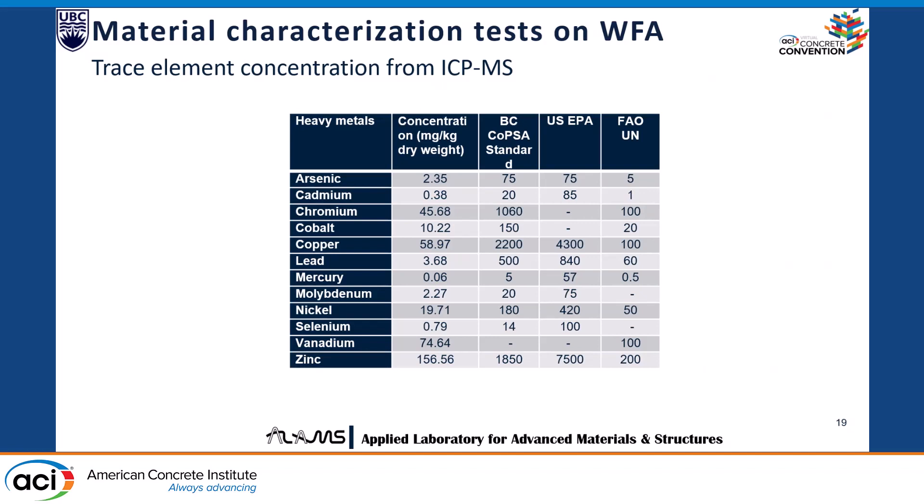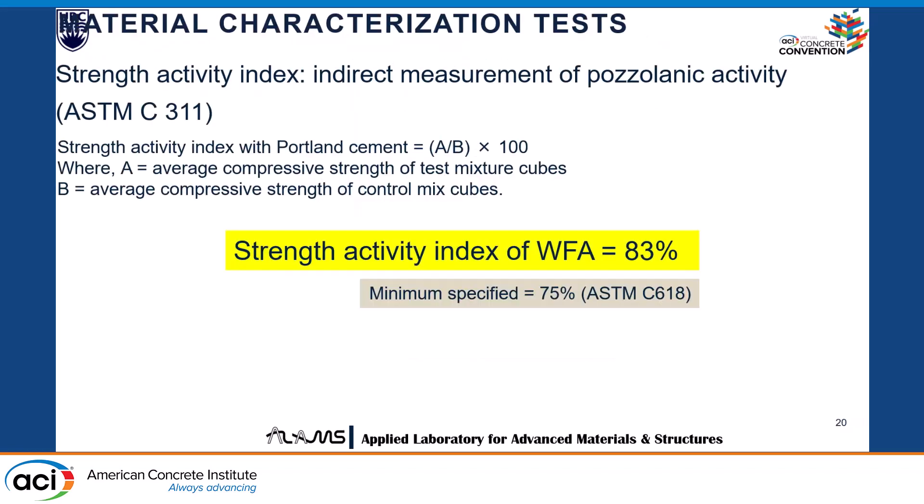This shows the trace element concentration — the heavy metal concentration. We did not find any significant trace elements in our sample. According to the regulations of British Columbia, the US EPA, and the Food and Agriculture Organization, the levels were all below the threshold. The strength activity index, as specified in ASTM C311, should be at least 75% — we achieved 83%, which also shows the potential for use as a pozzolan.